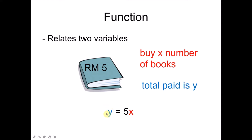Y is the total that I have to pay, and for each book I'm buying, I need to pay 5 for each of them. That's why 5 times X is the total, which is Y. So now I'm relating Y and X by using this, which we call an equation. A function which generally means the relation between variables, with two variables X and Y, is related and shown by using a mathematical equation. So a function can be represented in an equation form.